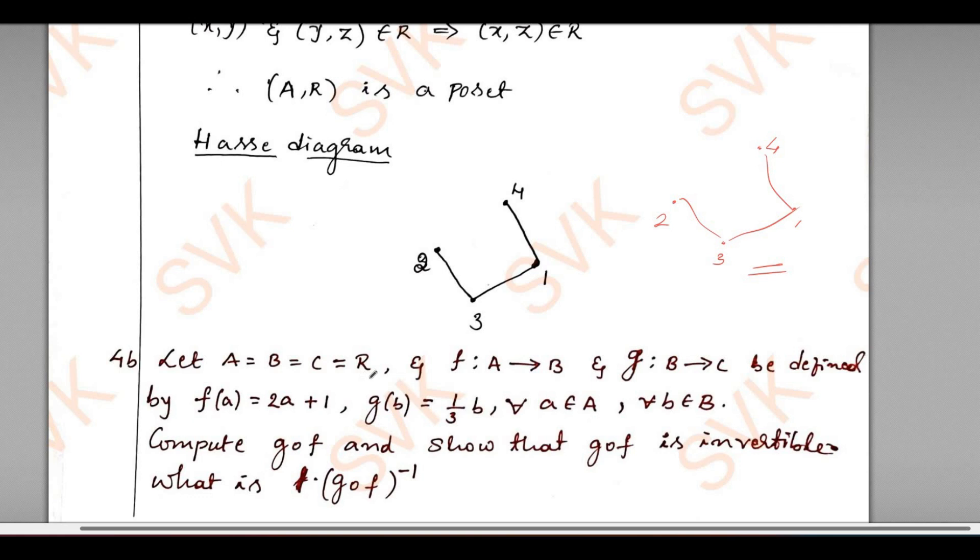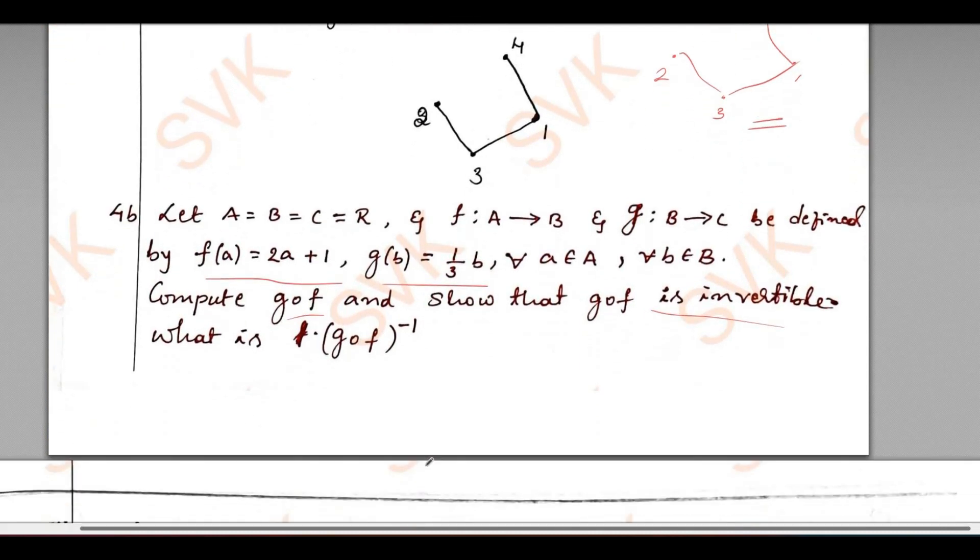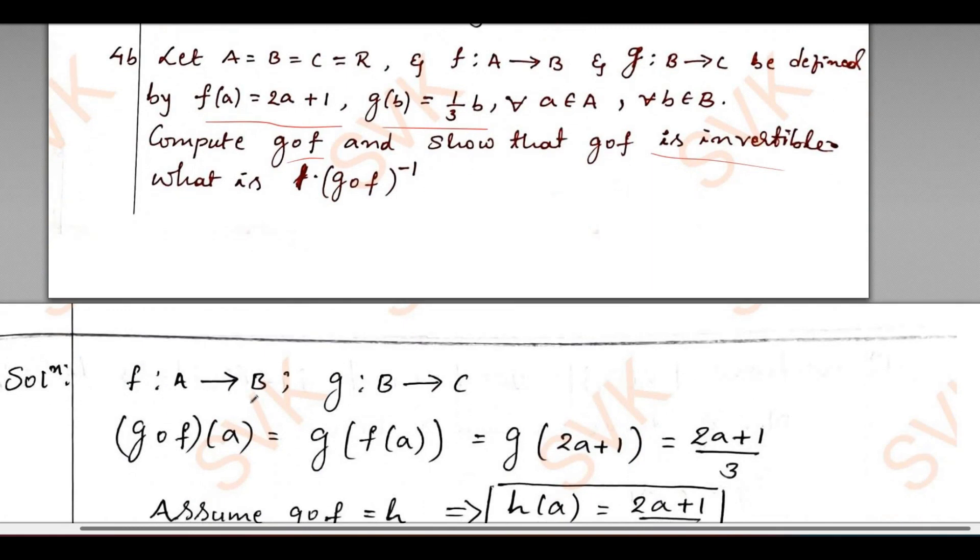Moving on to next question. Let A = B = C = R and f is a mapping from A to B and g is a mapping from B to C be defined by function f(a) = 2a + 1, g(b) = b/3. Compute g∘f and show that g∘f is invertible. What is (g∘f)^(-1)? Let us solve the invertible function.